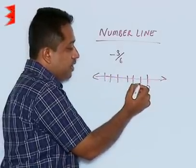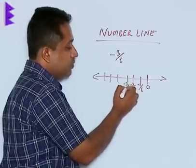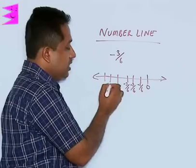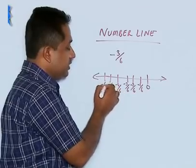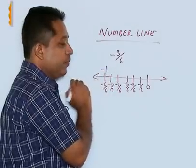Now, the first part will be minus 1 by 6, second is minus 2 by 6, this is minus 3 by 6, minus 4 by 6, minus 5 by 6 and minus 6 upon 6, and minus 6 upon 6 is nothing but minus 1.